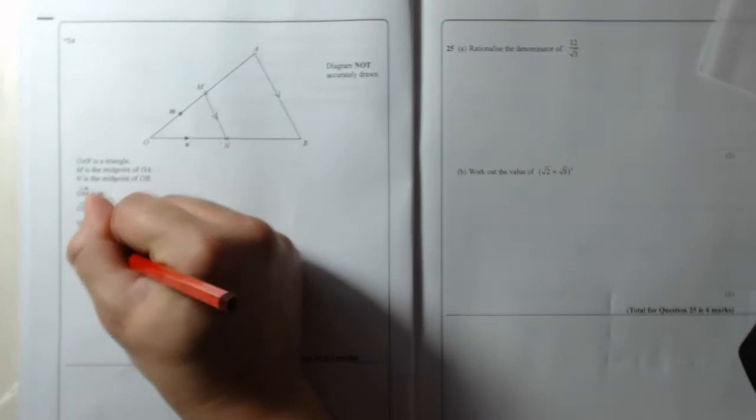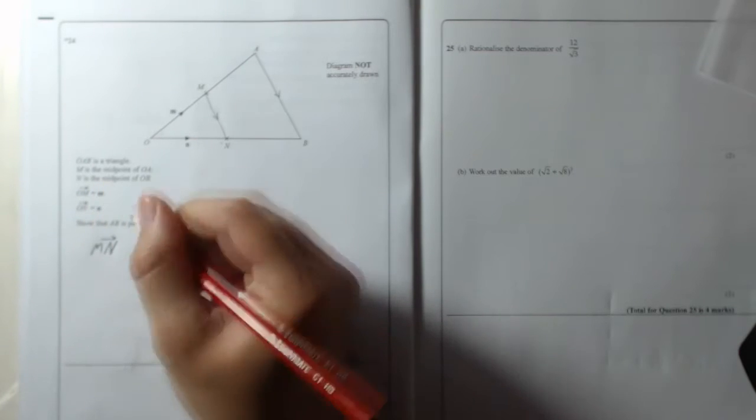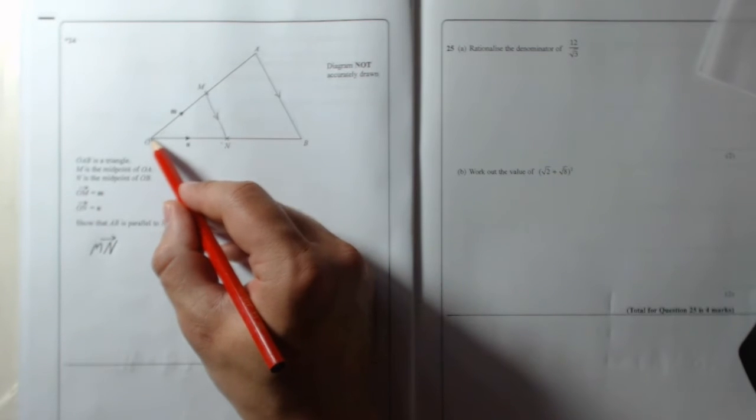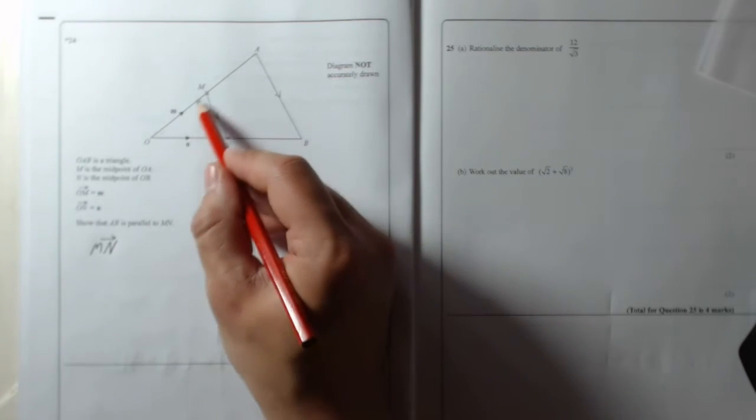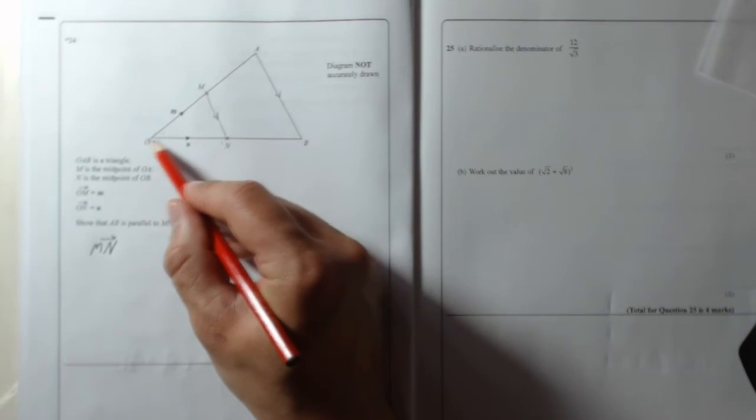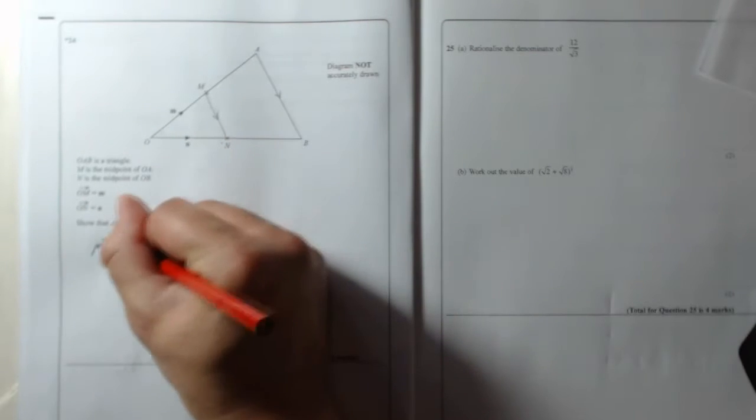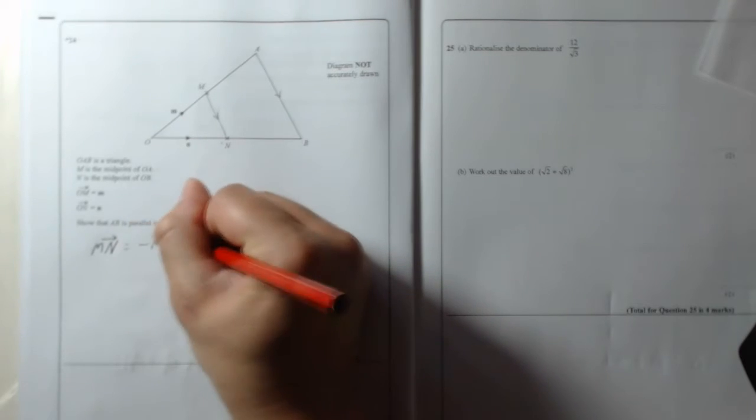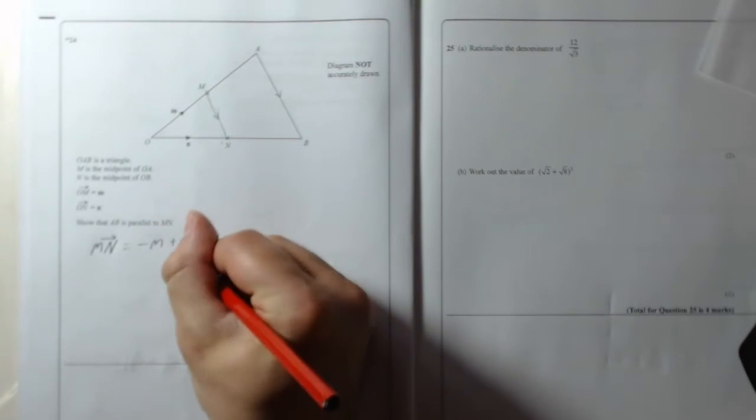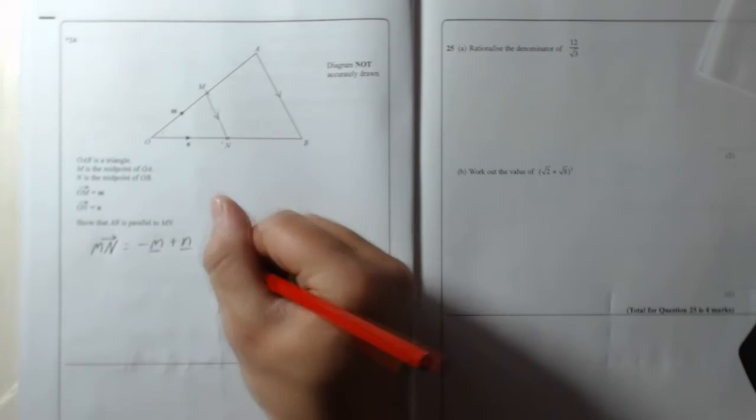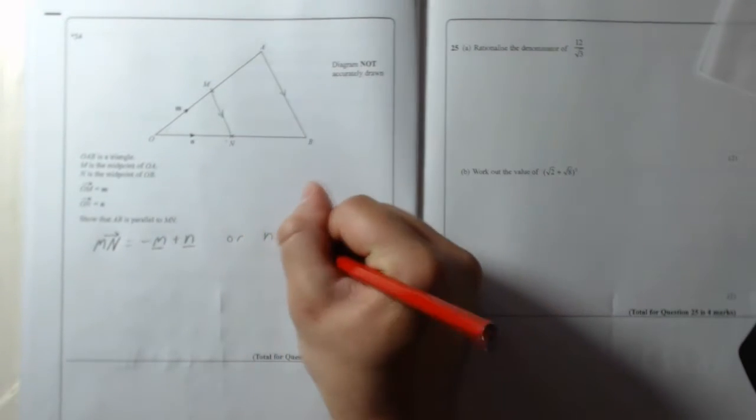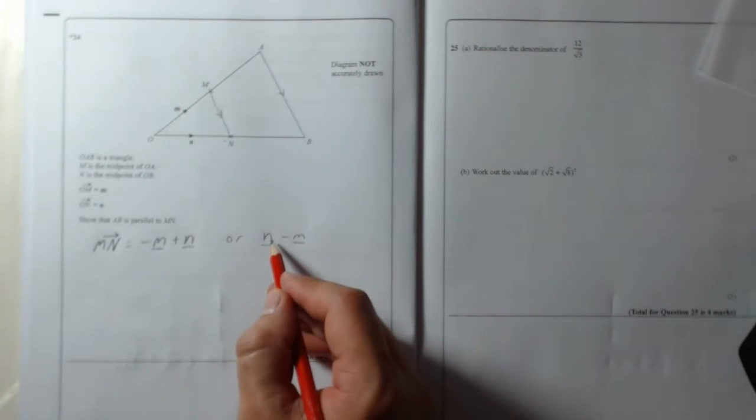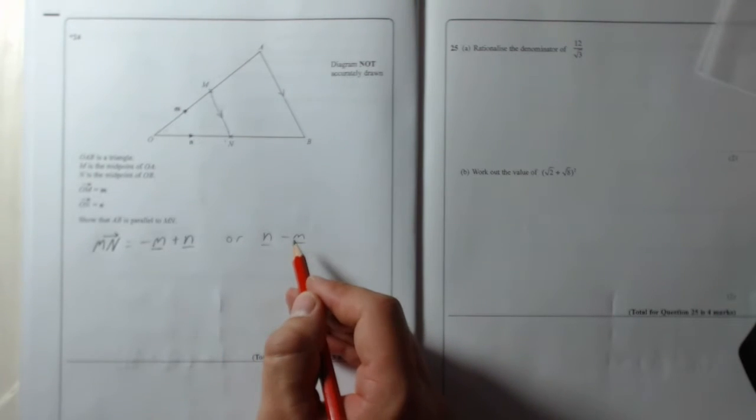So we'll work out MN first. So from M to N you've got to go, well I'll write it down. MN arrow is equal to going backwards down M and then forwards down N, so it's minus M plus N. Now obviously I can't write in bold so I'll underline these. And now that's the same as N minus M.